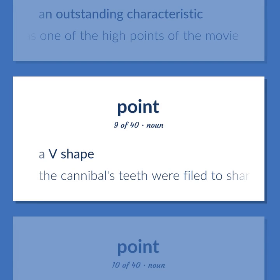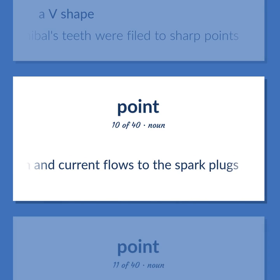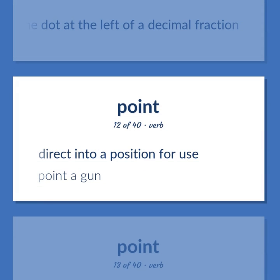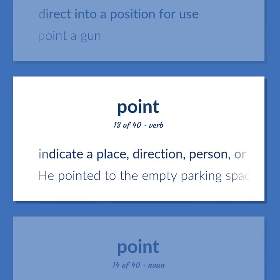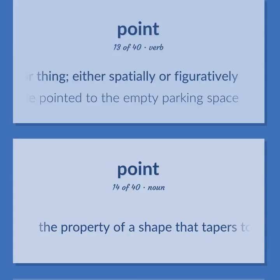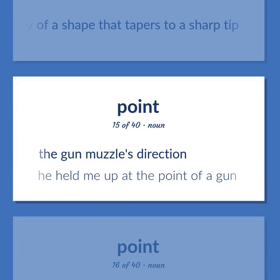A V shape. Example: The cannibal's teeth were filed to sharp points. A contact in the distributor — as the rotor turns, its projecting arm contacts them and current flows to the spark plugs. The dot at the left of a decimal fraction. Direct into a position for use. Example: Point a gun. Indicate a place, direction, person, or thing either spatially or figuratively. Example: He pointed to the empty parking space. The property of a shape that tapers to a sharp tip. The gun muzzle's direction. Example: He held me up at the point of a gun.